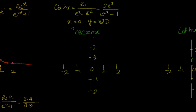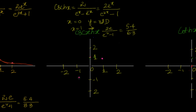So for x equal to 0, y is undefined. For x equal to 1, y equals 2e by (e^2 - 1), which is 5.4 by 6.3, giving approximately 0.85. We know this is an odd function, so for x equal to negative 1, y will be negative 0.85.